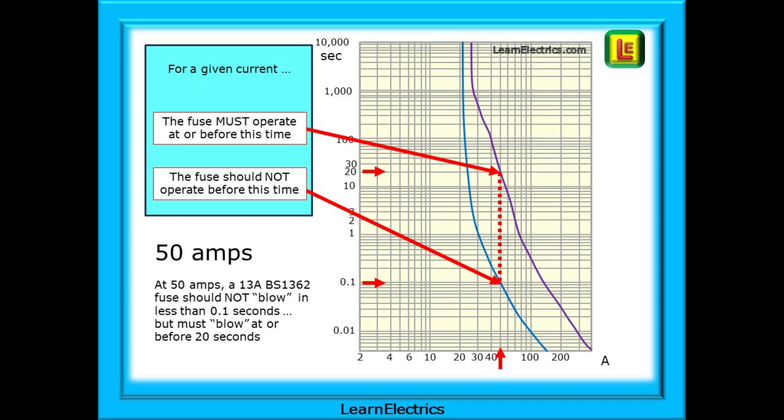As an example, we can use a current of 50 amps. At 50 amps, a 13 amp BS 1362 fuse should not blow in less than 0.1 seconds, shown by the point where the bottom of the red dotted line touches the blue curve. But it must blow at or before 20 seconds, as shown by the point at which the top of the dotted line meets the purple curve.